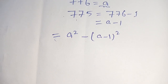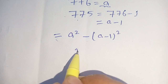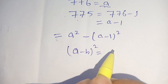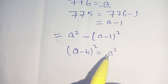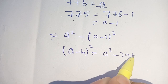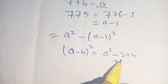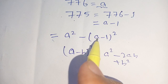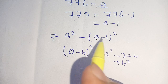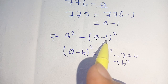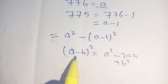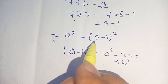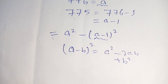Now we know that A minus B whole square is equal to A square minus 2AB plus B square. Here, A is A and in place of B there is 1. Now we use the A minus B whole square expansion for the second term.